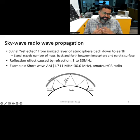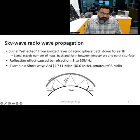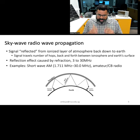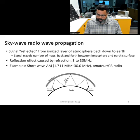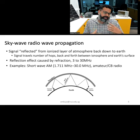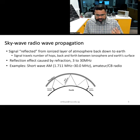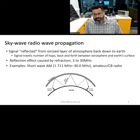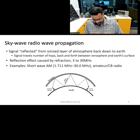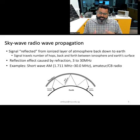Next, we will examine sky wave propagation. This method utilizes ions in the atmosphere and operates for frequencies between 3 to 30 MHz. The atmosphere contains a layer of ions that can reflect radio waves. The transmit antenna sends a radio wave which is then reflected by the ionosphere, and this process continues, allowing radio waves to achieve significant communication ranges. Sky wave propagation is commonly used for short wave and crystal radio technology.